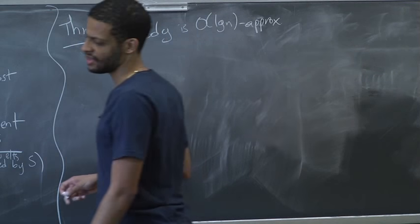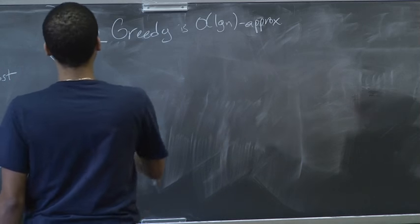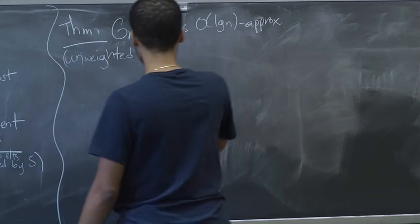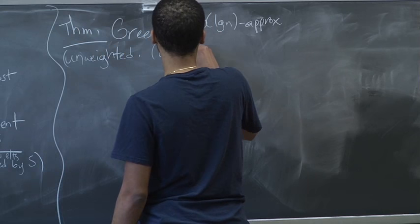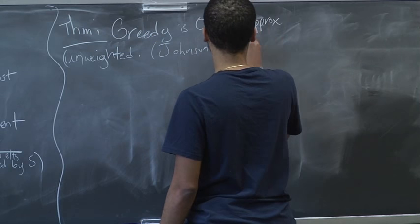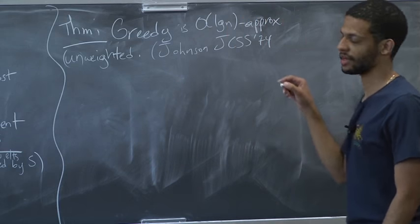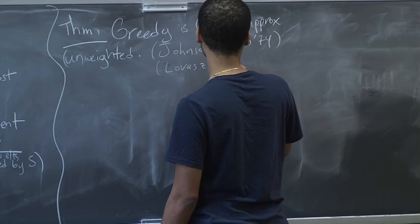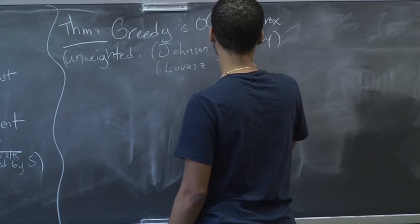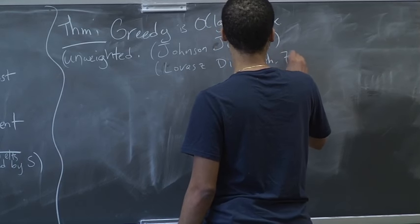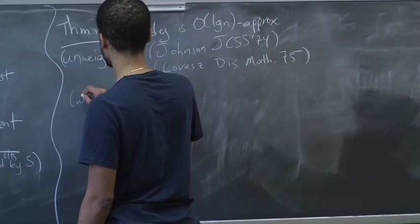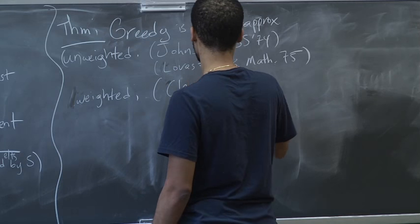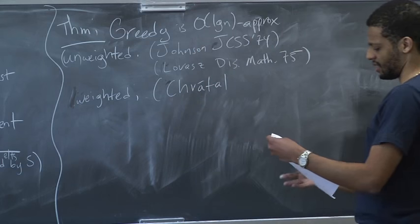Just some history: in the unweighted case, when all the costs are one, this greedy algorithm is due to Johnson back in '74, and also independently in discrete math '75. In the weighted case, the algorithm was from '79.